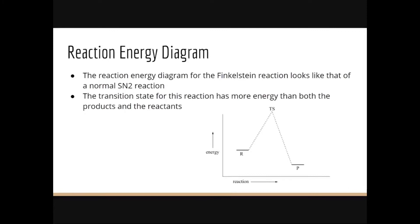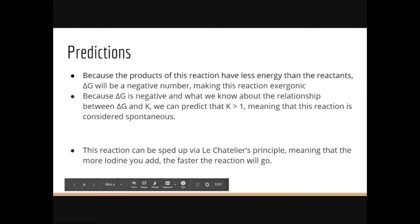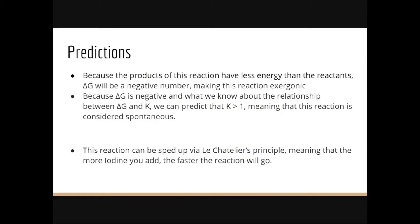Based on the reaction energy diagram, we can make some predictions. Because the products have less energy than the reactants, delta G will be a negative number, making this reaction exergonic. Because delta G is negative, we can predict that K is greater than one, meaning this reaction would be considered spontaneous. One thing we could do to speed up this reaction is apply Le Chatelier's principle — adding more iodine will drive the reaction forward since it's based on an equilibrium.